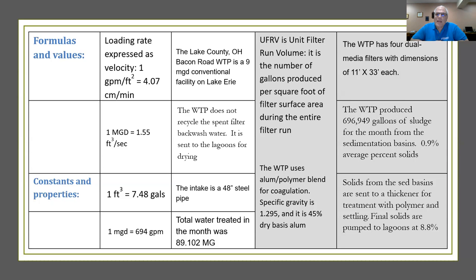The water treatment plant has four dual media filters, listed at 11 feet by 33 feet each. It uses an alum polymer blend for coagulation. The specific gravity of that solution is 1.295, and it is 45% dry basis alum. Using that product and treating Lake Erie water, the plant produced 696,949 gallons of sludge for the month at 0.9% average percent solids. They sent it to their thickeners, added polymer, and the final solids pumped to the lagoons out of the thickeners was 8.8%.